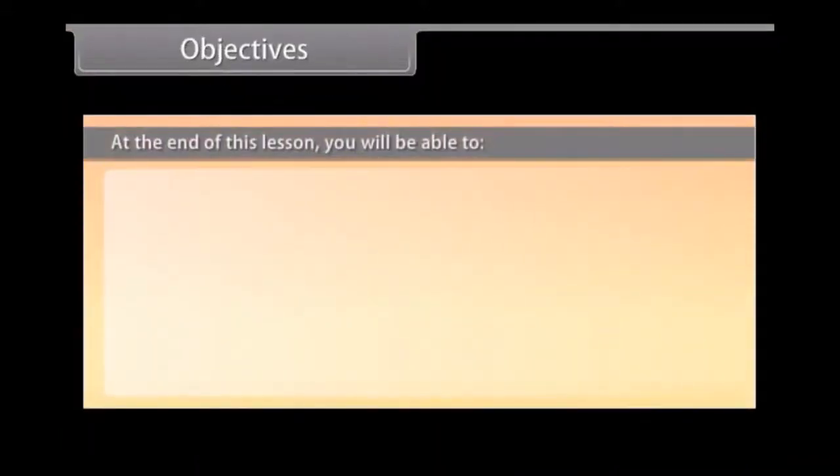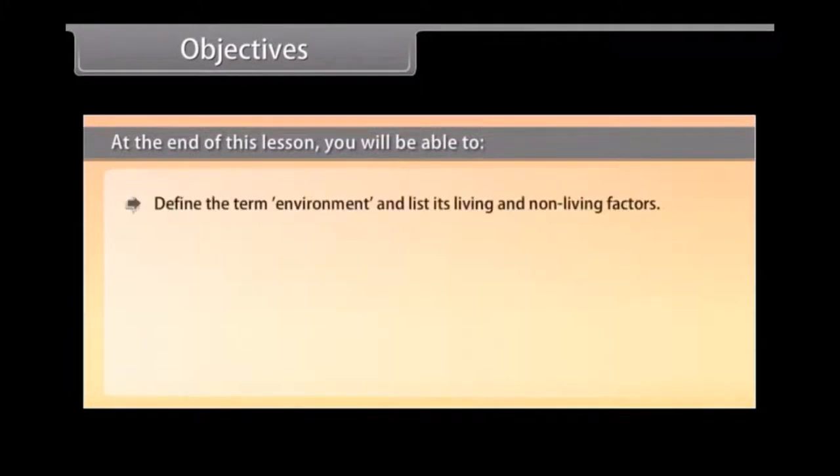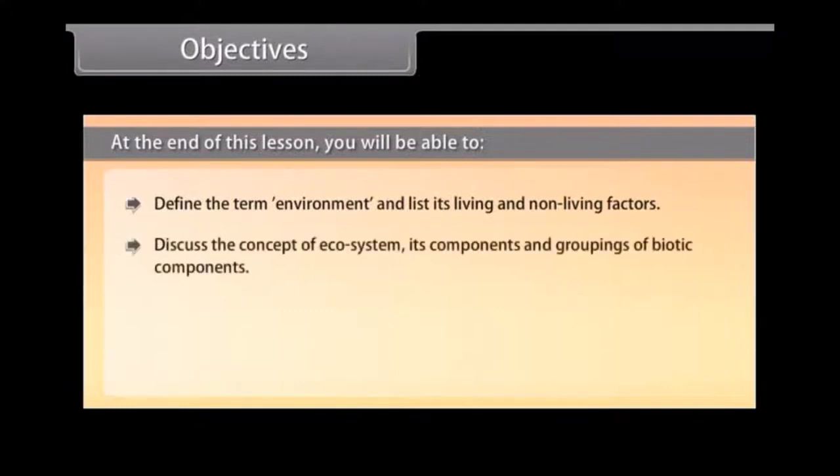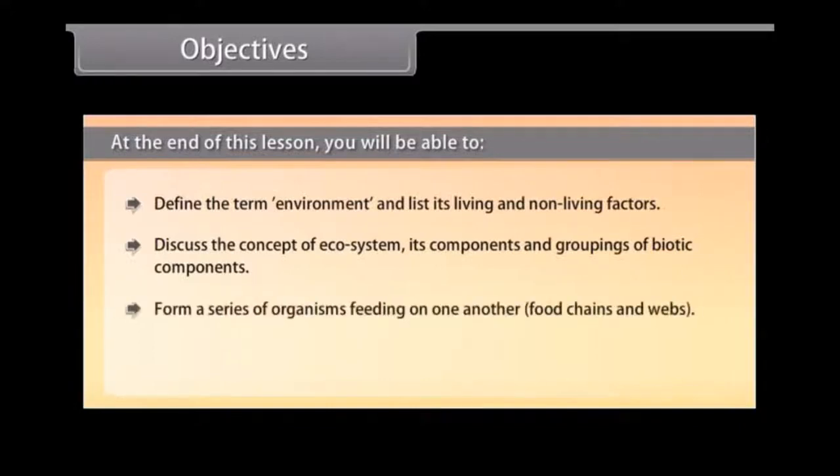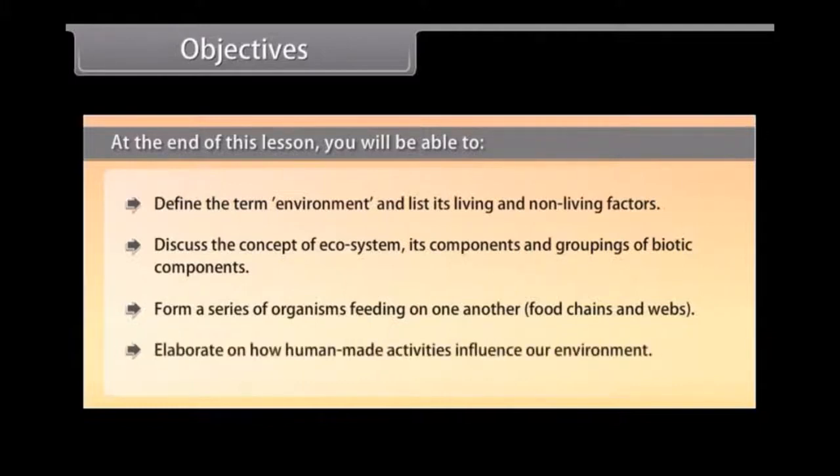Objectives. At the end of this lesson, you will be able to define the term environment and list its living and non-living factors, discuss the concept of ecosystem, its components and groupings of biotic components, form a series of organisms feeding on one another, food chains and webs, and elaborate on how human activities influence our environment.